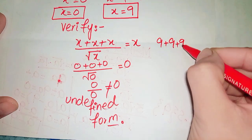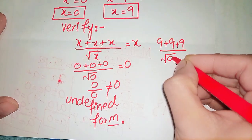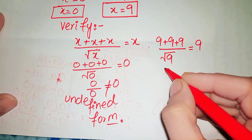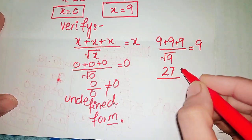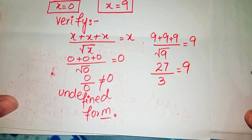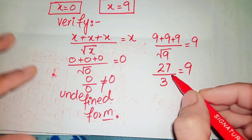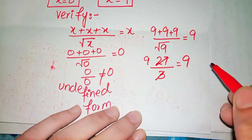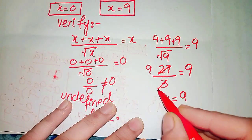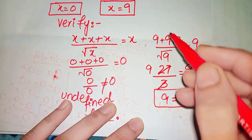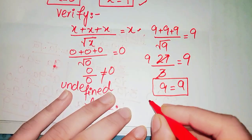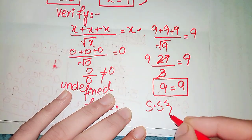When we put x equals 9, the equation becomes 9 plus 9 plus 9 over square root of 9, which is 27 over 3, which equals 9. So 9 equals 9 is verified, meaning x equals 9 is the solution set for the equation.